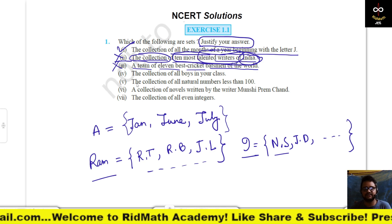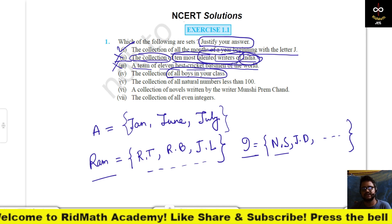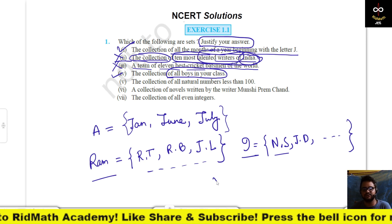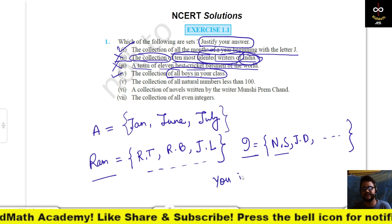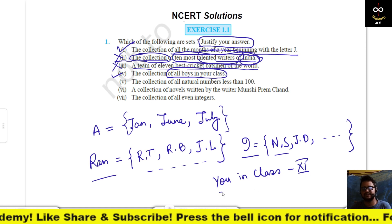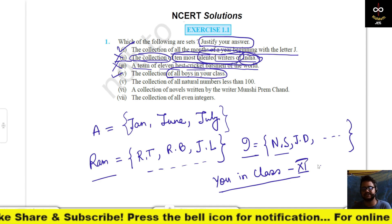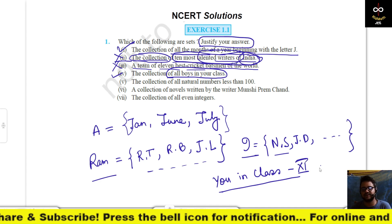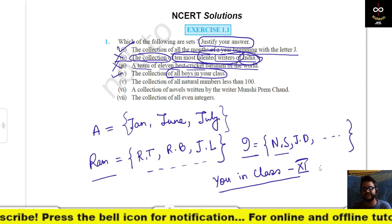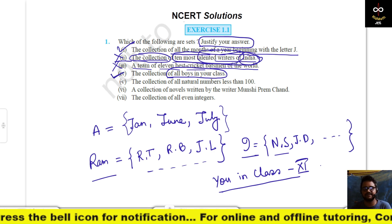Fourth is the collection of all boys in your class. This makes a set because you are in a particular class, say class eleven, and there are a certain number of boys who are all distinct and distinguishable. So this makes a set.